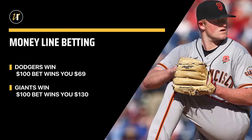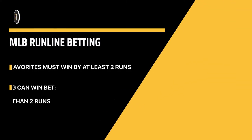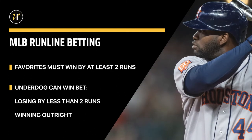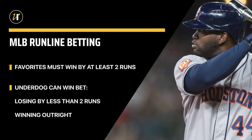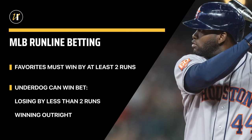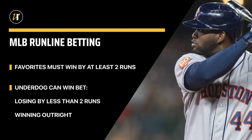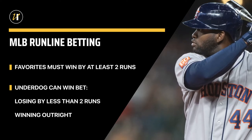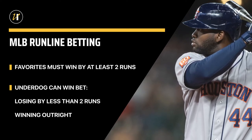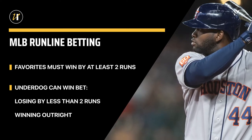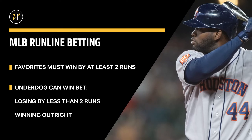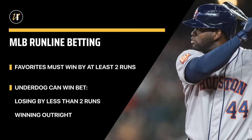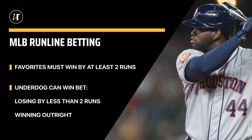Another way to bet on an MLB game is the run line, which is baseball's version of a spread. Run line betting involves a one and a half run spread where the favorite must win by at least two runs to win the bet, while the underdog can lose by one run or win outright to cover their side of the run line bet.